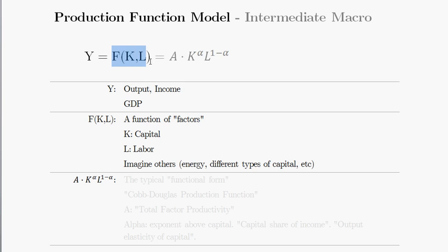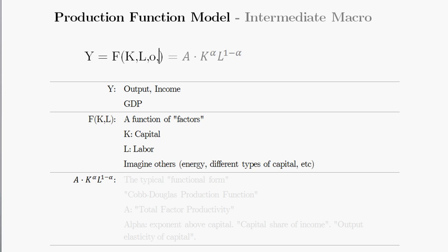So what we're saying in a macroeconomy is that output income is equal to some function of our factors. In a simple production function model, we're going to keep things as simple as possible, so we're just going to deal with capital and labor as our factors. But you could also imagine that for a realistic economy, you might also have oil or different types of capital like durable capital. So these factors could go on quite a bit, but we're trying to keep things simple, so we'll stick with capital and labor.